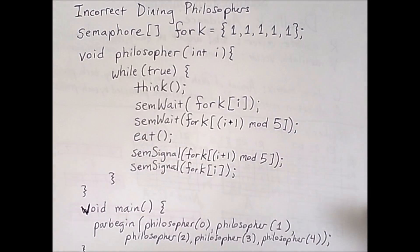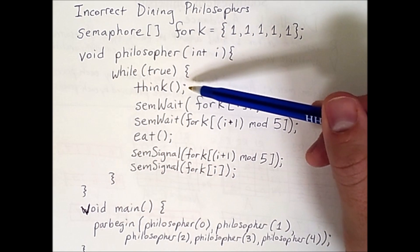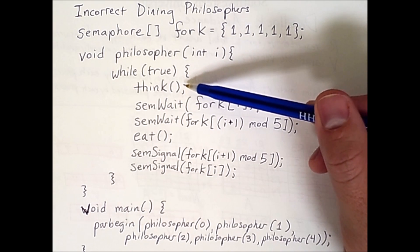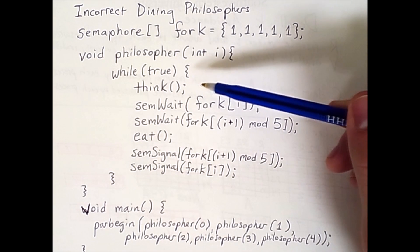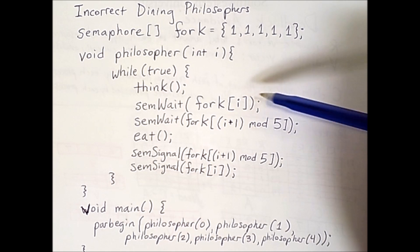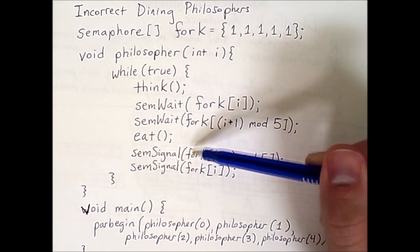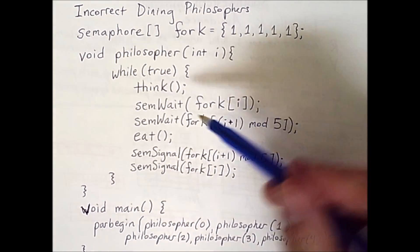What does a philosopher do? This loop goes on forever, and the philosopher thinks for a while, and there's no telling how long this will take. Then when it's done thinking, it grabs one fork, then the other fork. When it has both forks, it eats, and then it releases both forks.